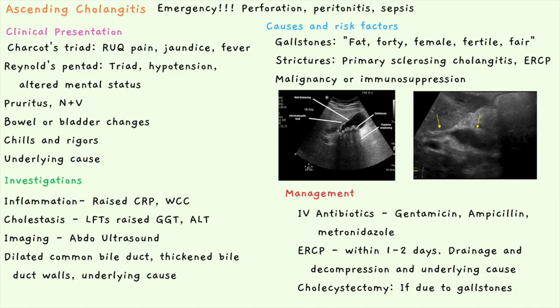Finally, you can consider a cholecystectomy, but not during the acute ascending cholangitis episode because the risk of perforation, peritonitis, and sepsis is heightened during any procedure. You should wait a few weeks for the infection to resolve and then remove the gallbladder, as per standard gallstone treatment, if gallstones were the cause of the ascending cholangitis.